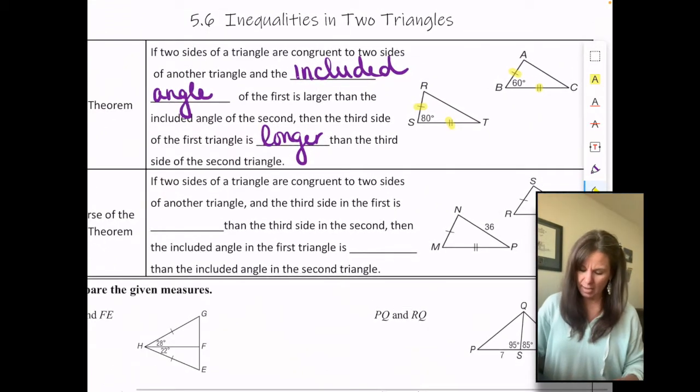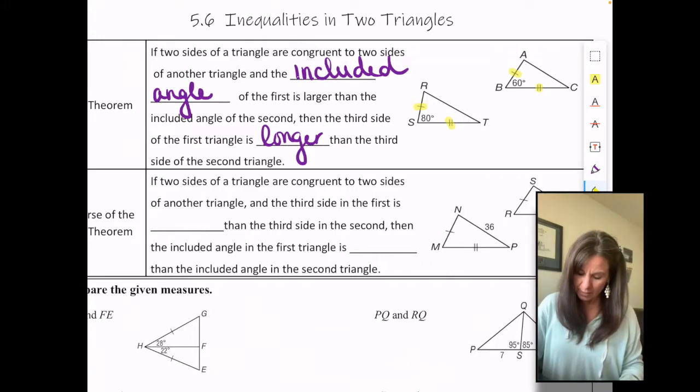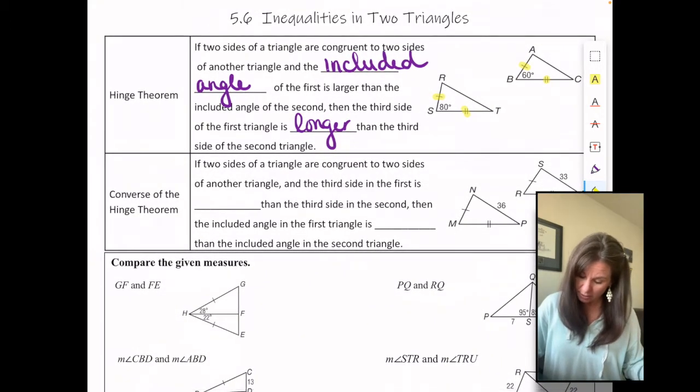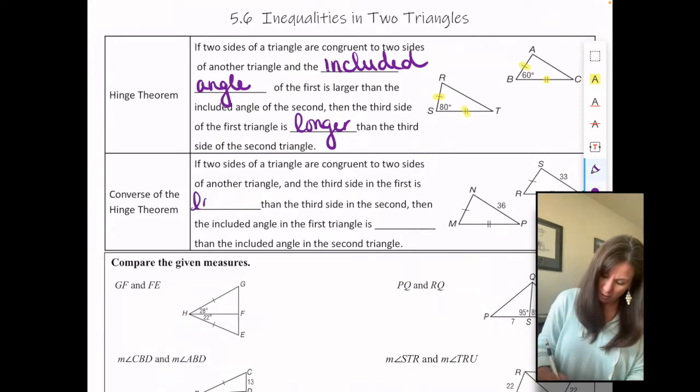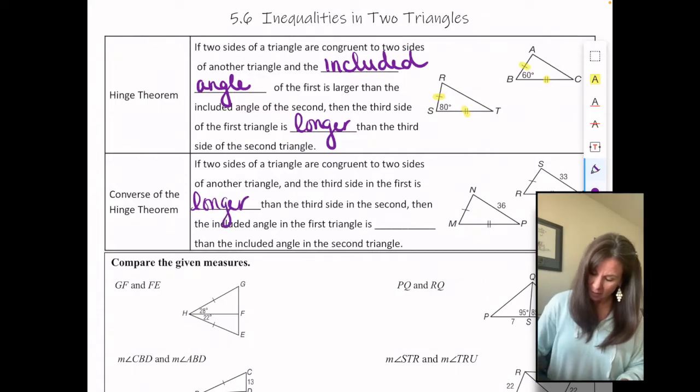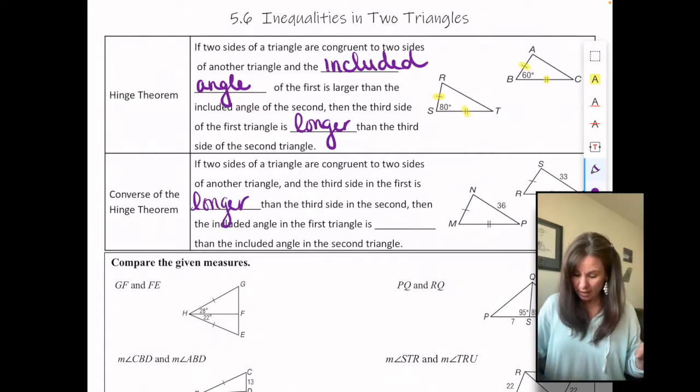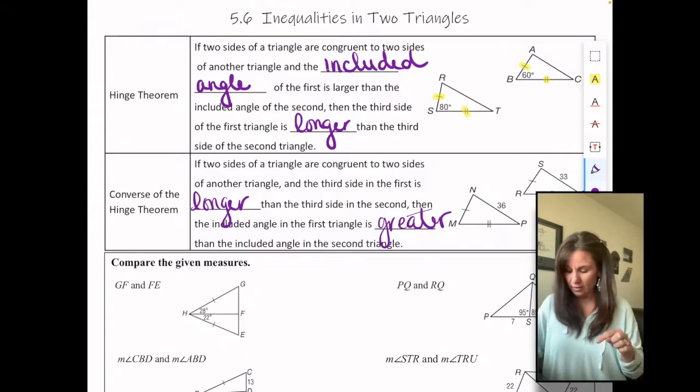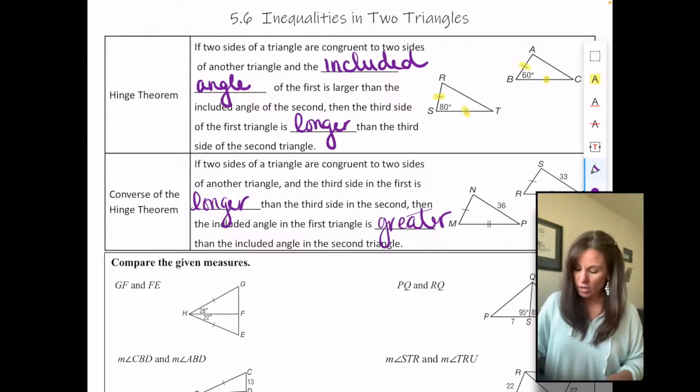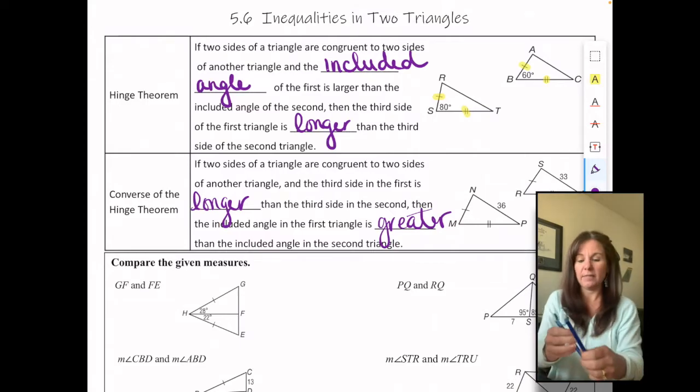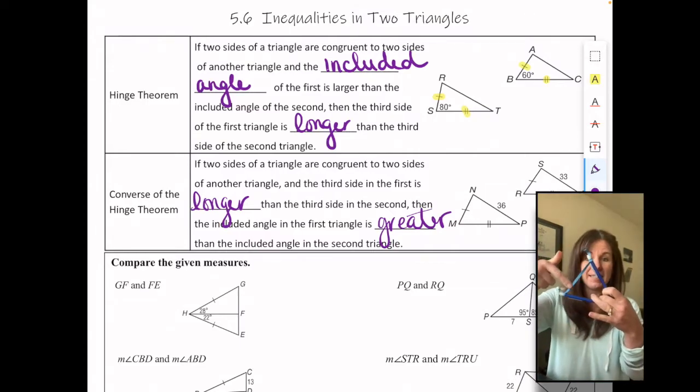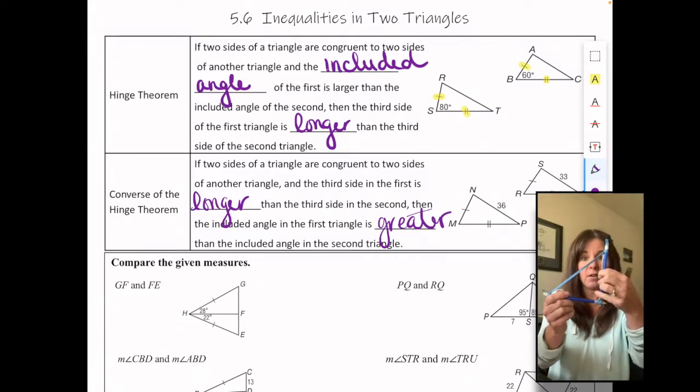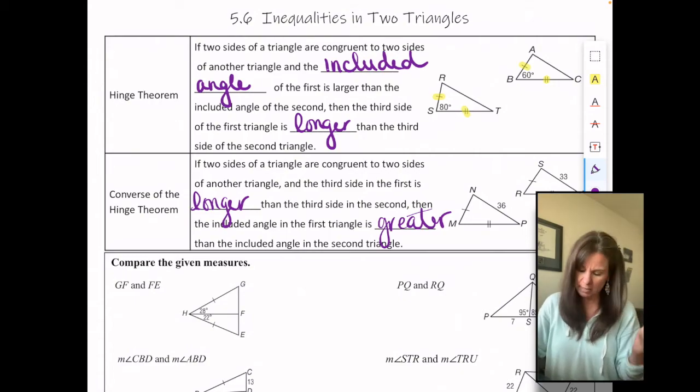The flip side of that is also true. If two sides of a triangle are congruent to two sides of another triangle and the third side in the first is longer than the third side in the second, then the included angle in the first triangle is greater than the included angle in the second triangle. So this time we're just looking at it from the perspective of the side. So this side gets bigger, then the angle across from it gets bigger, as long as these two corresponding sides are congruent.